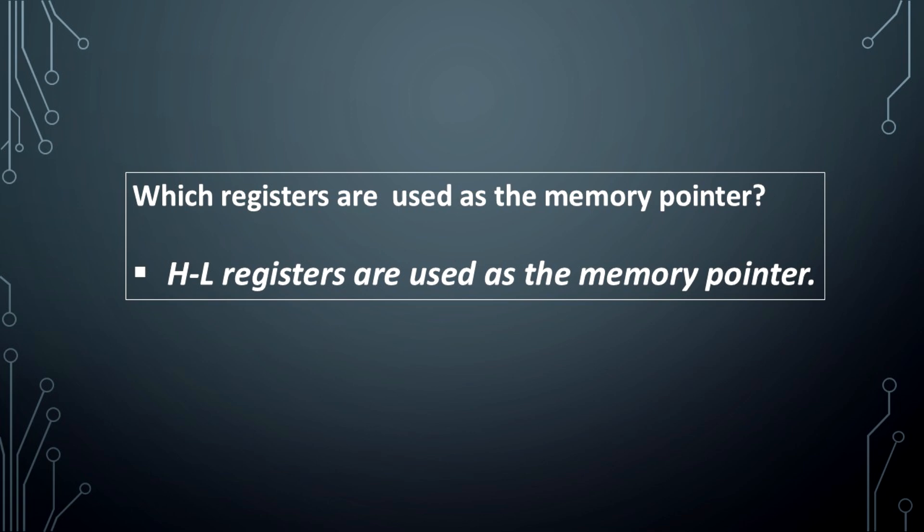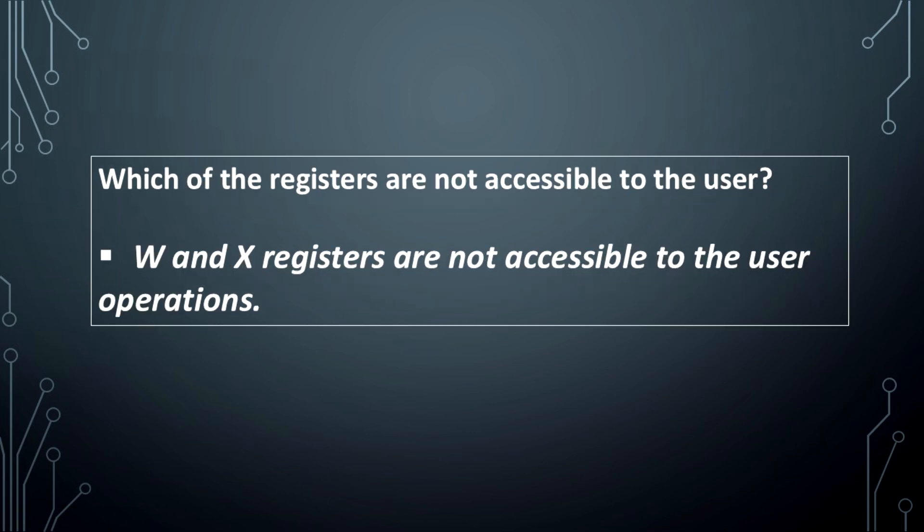H and L registers are used as the memory pointer. Which of the registers are not accessible to the user? W and X registers are not accessible to the user operations.